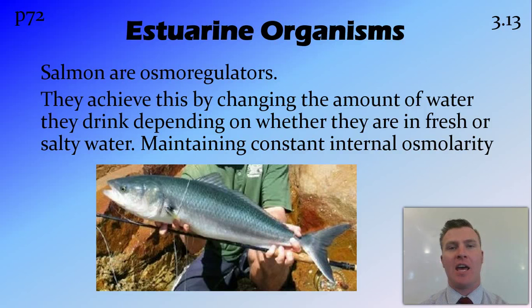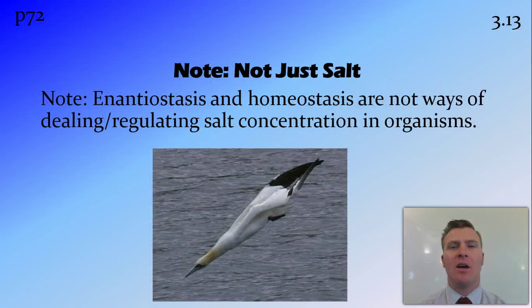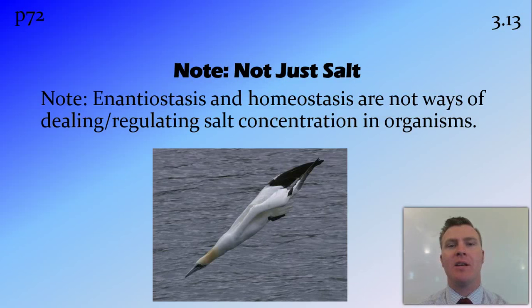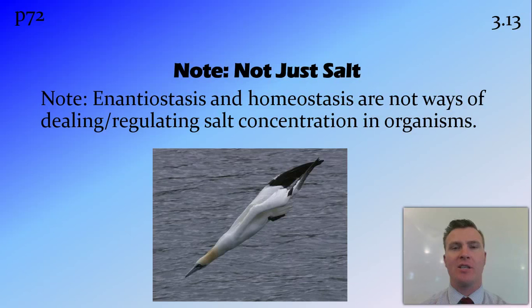Antiostasis and homeostasis aren't just ways of regulating salt — there are other things regulated by these two processes. I just used the example of salt and estuaries because it's easy to understand and fits well into the HSC. For example, diving birds undergo antiostasis to deal with different pressures whether they're in the air or underwater. But we're going to concentrate on salt for this example.